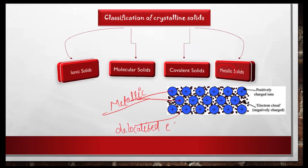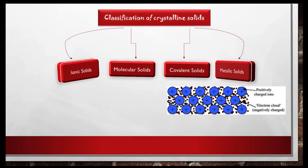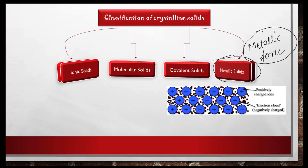The force of attraction between the delocalized electrons and the metal cations keeps metallic solids together. Ionic solids and metallic solids look quite similar — both have positive and negative constituent particles. However, in metallic solids the electrostatic force is called metallic force, which is slightly weaker than the electrostatic force present in ionic solids.